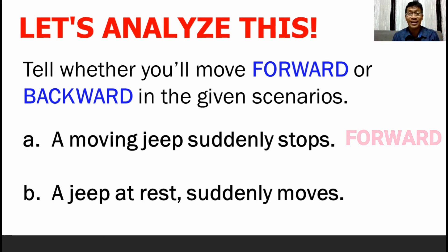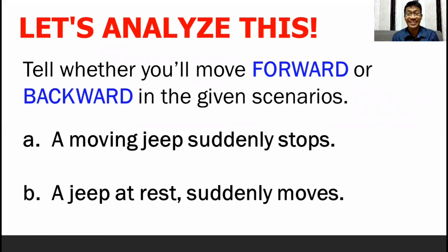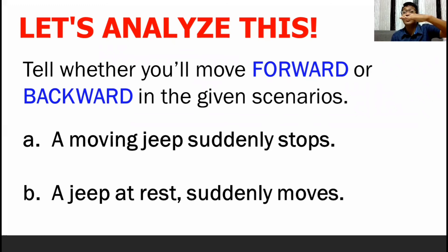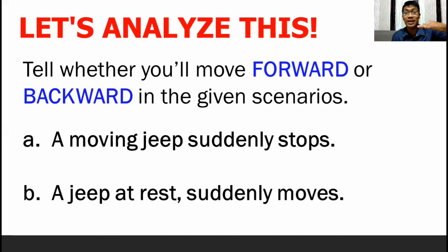The second scenario: a jeep at rest suddenly moves. It is stopped, then suddenly it moves. Will you move forward or backward? The answer is backward. Since you are at a state of rest, when the jeep suddenly moves, you will remain at rest — as if left behind — so you will move backward. A body always has inertia, so it has resistance to change in its state. If you are moving, you will still move then stop. If you are at rest, you will remain at rest, then moving.